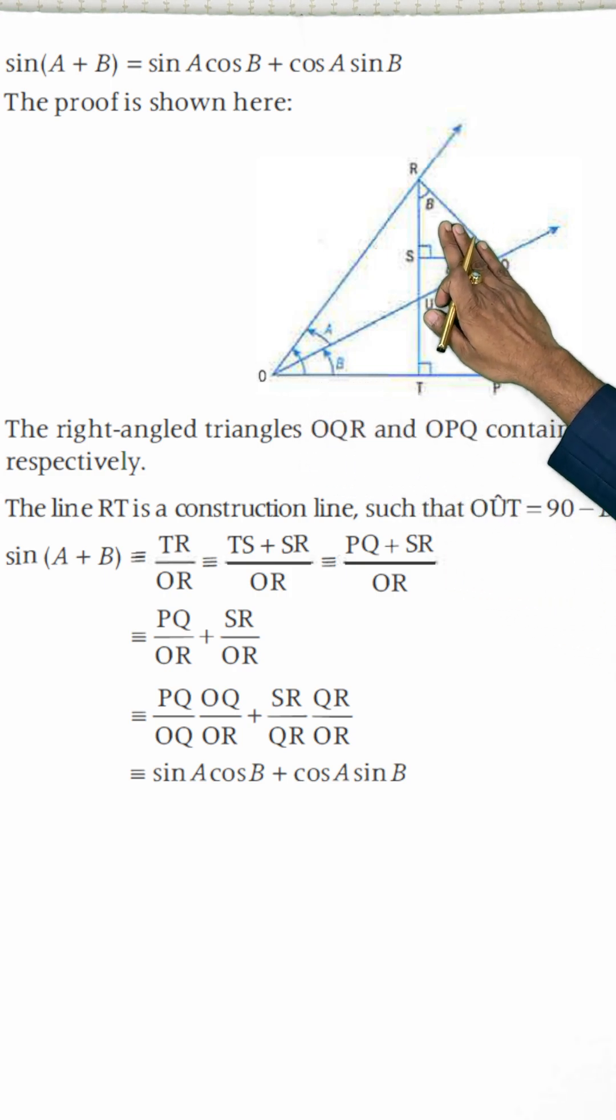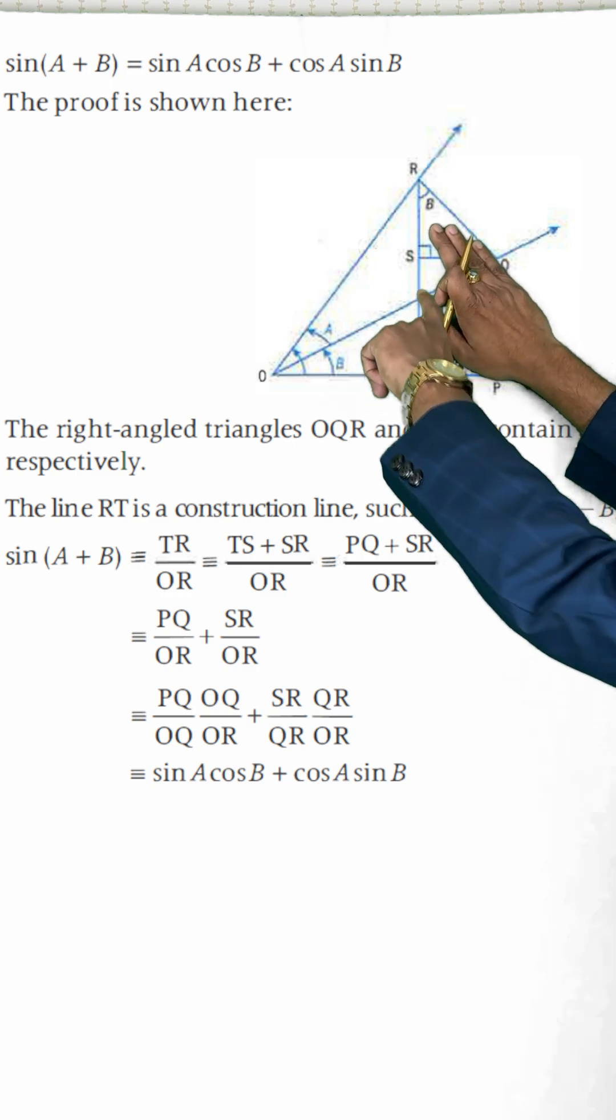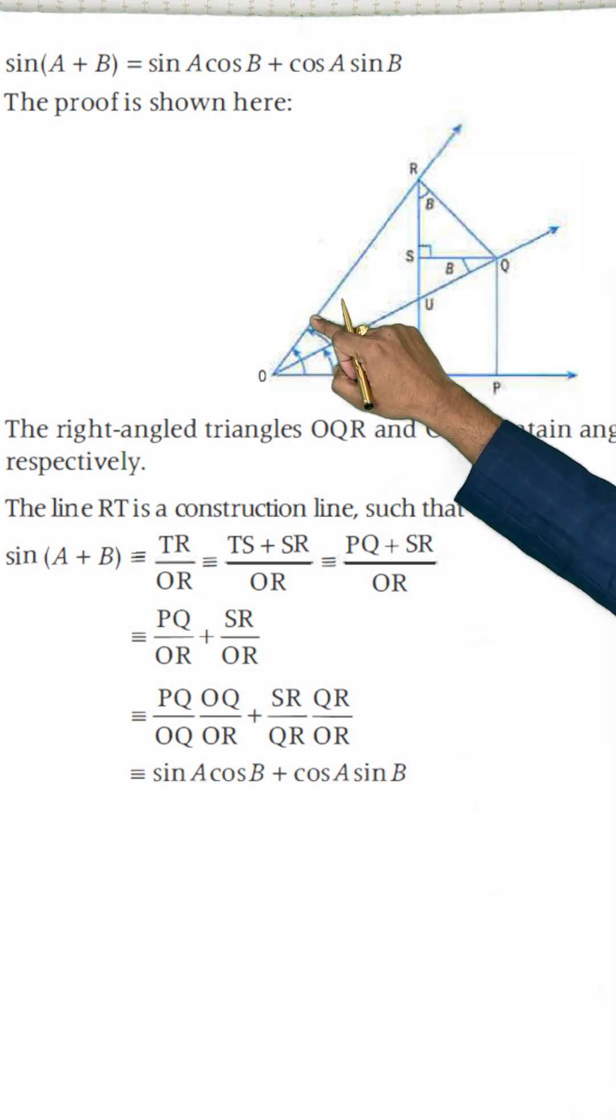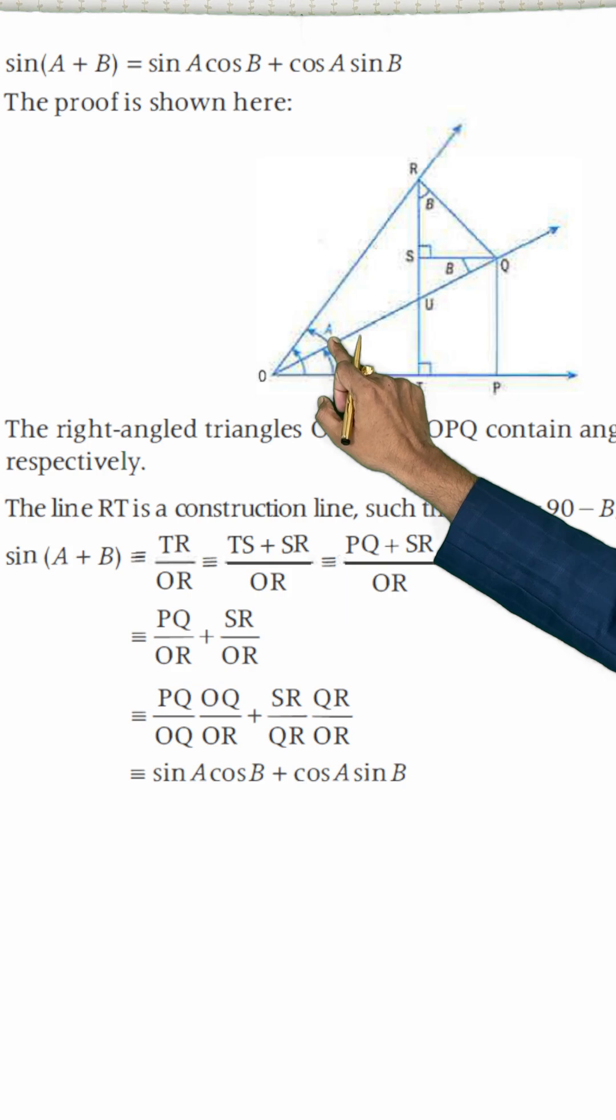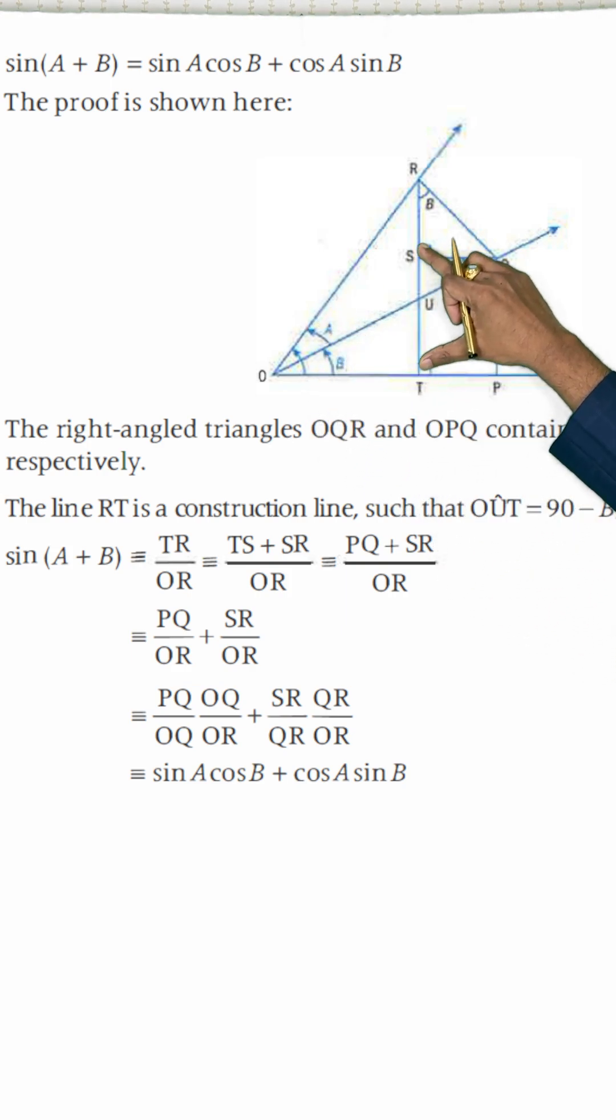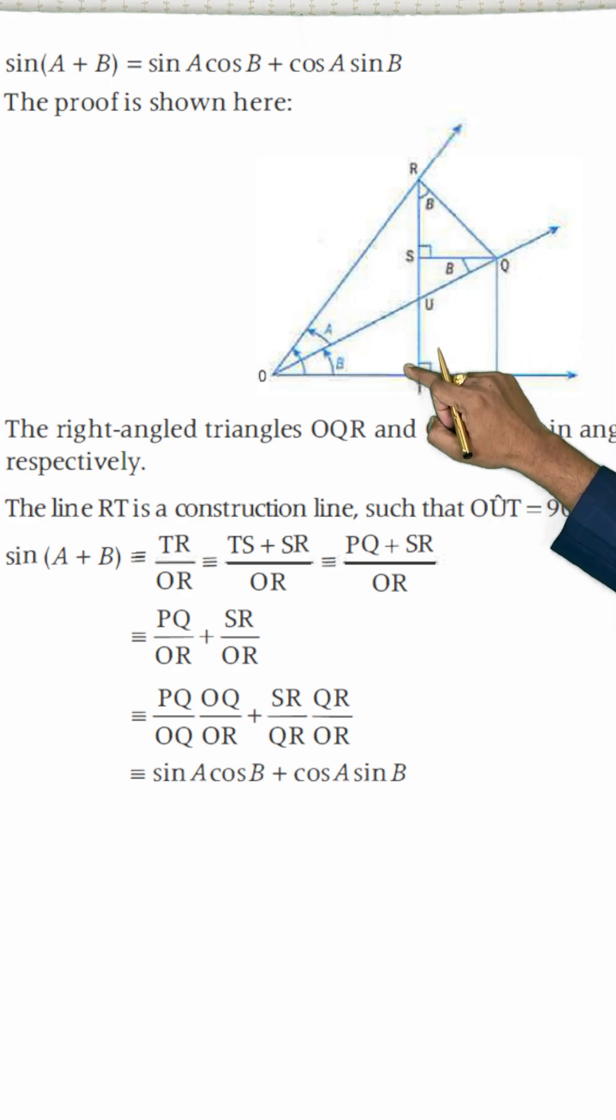Now, you can see this triangle. In this triangle, if I say about this angle, I mean A plus B. For this angle, the sine ratio will be opposite side to hypotenuse. This is opposite side. RT is the opposite side.